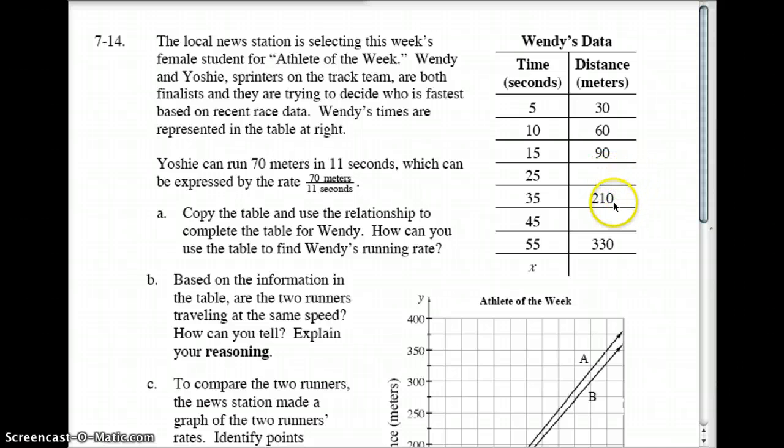150 plus 60 more would be 210. 45, you can fill that one in. Now let's look at Yoshi. Yoshi is the other runner and she can run 70 meters in 11 seconds. That's kind of hard to compare with this.